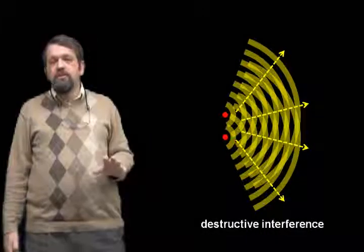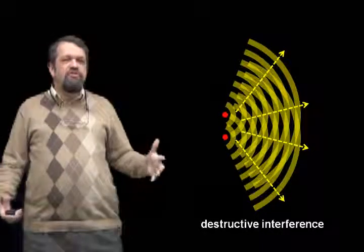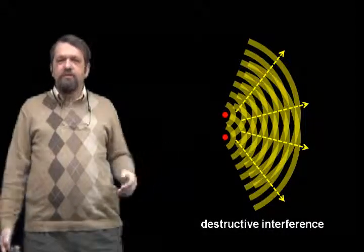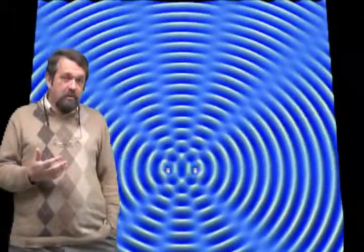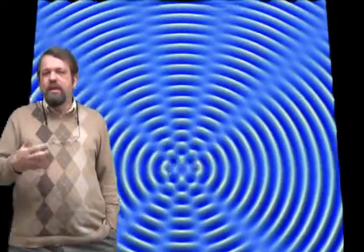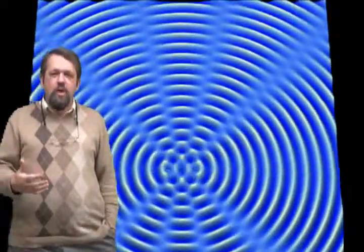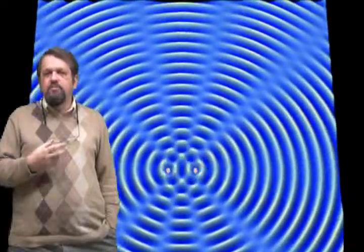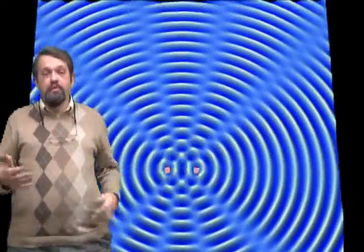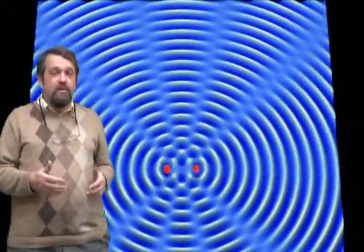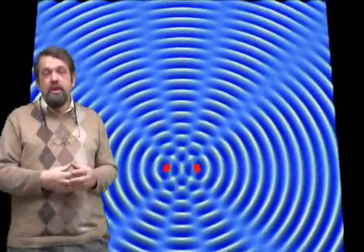Constructive interference and destructive interference are the basic extreme examples of wave interference. Here's an animation produced by some guys at Penn State showing just exactly what we're talking about, but in a moving way. You can see the two sources of waves producing waves that spread out in both directions. The total wave is the sum of these two waves. Along certain directions the waves cancel out — that's destructive interference. Along certain directions, the waves have twice the amplitude of either wave individually — that's constructive interference.